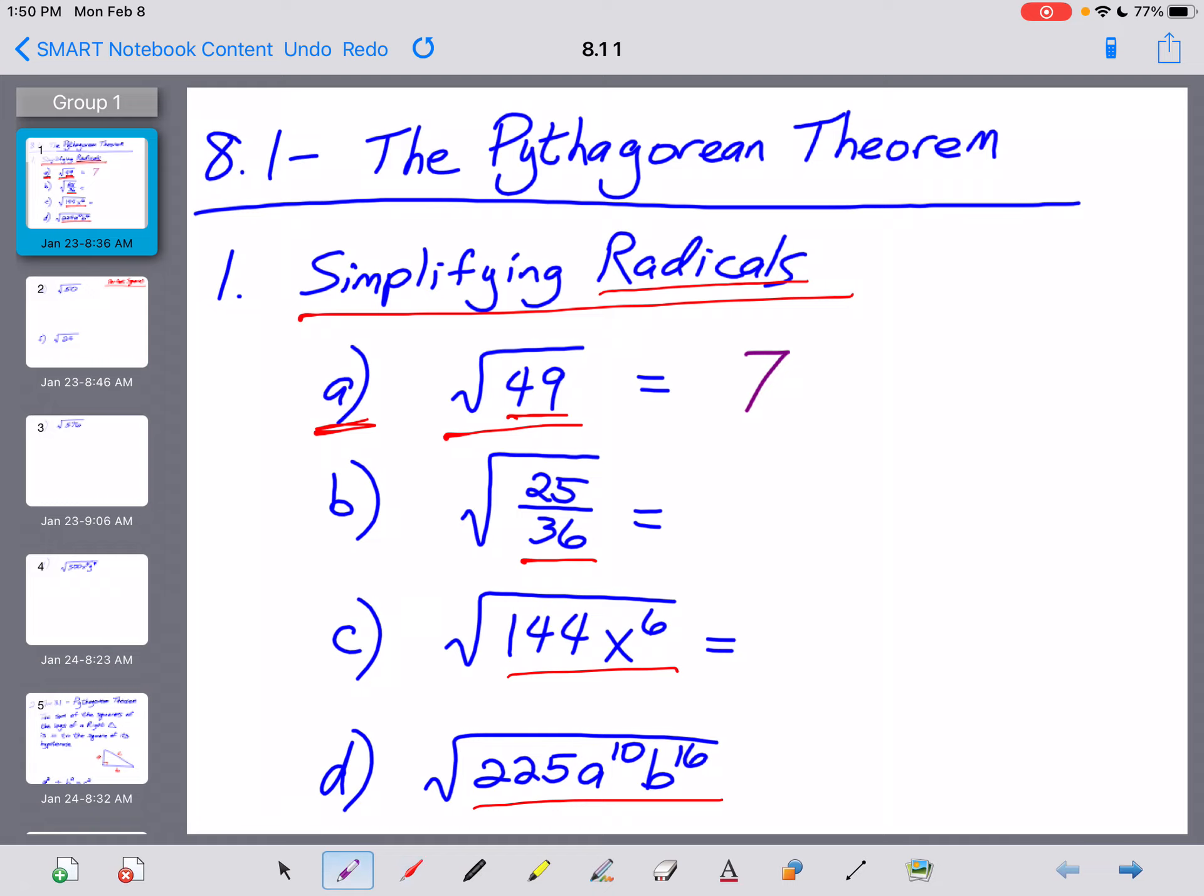Going right down the list, you take the square root of a fraction by simply taking the square root of the numerator, then the square root of the denominator. So the square root of 25 over 36 is just going to be 5 over 6.